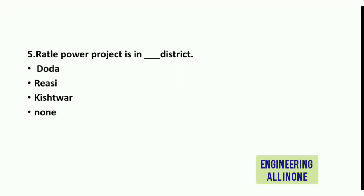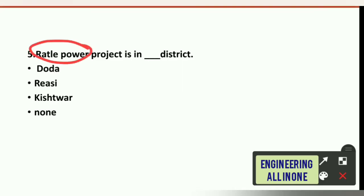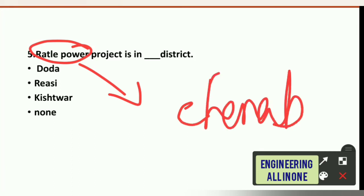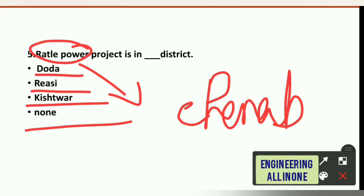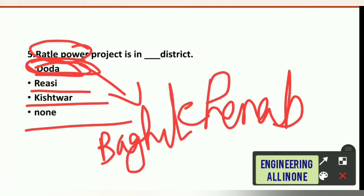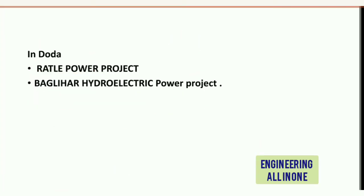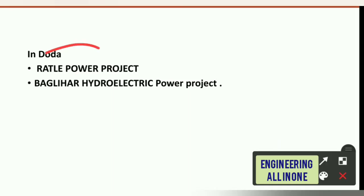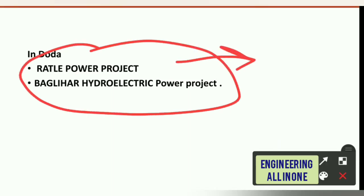Question 5: Rattle power project is in which district? We already know Rattle power project is on the Chinab river. Options are: Doda, Riyasi, Kishtwar, or none. The right answer is option A: Doda. Rattle power project is in the Doda district, and Baglihar hydel power project is also located in Doda. So in Doda we have two projects: Rattle and Baglihar.